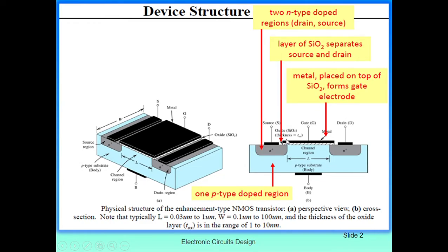Here you can see this black terminal — this is basically metal placed on top of SiO2 or silicon oxide, and this is called the gate electrode. So this is the gate terminal, this is the source terminal, and this is the drain terminal. And this is the channel region. Because this is an N-type MOSFET, here you can see the fourth terminal — that is the body terminal. This is the P-type substrate.